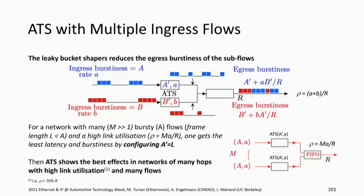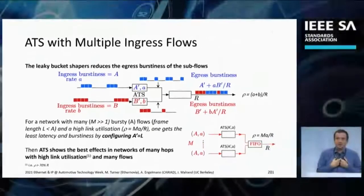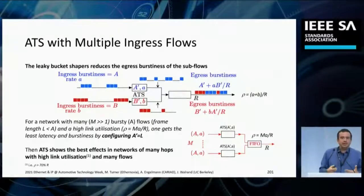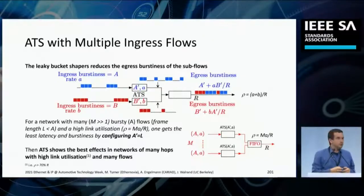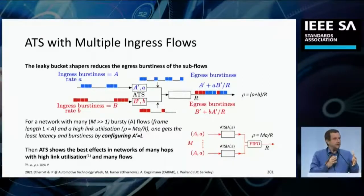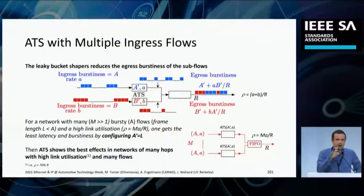Even though frames belong to the same traffic class, they go to different ATS shapers — that needs hardware effort to handle multiple shapers and multiple queues. The main point and difference is we can actually do this on a per-flow basis, not on a per-class basis. Classes keep bunches together, but with ATS we can actually separate them out and make room.